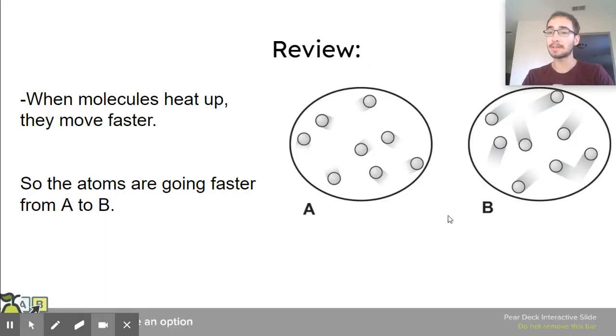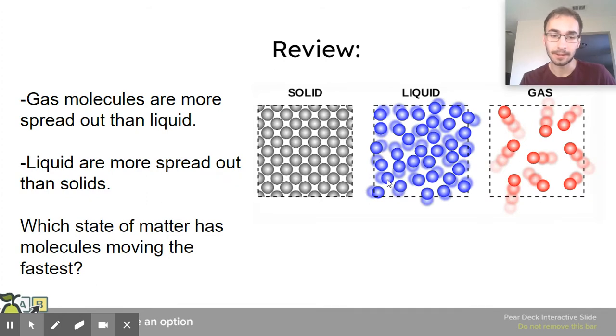Here's some review from the test. So we have two different molecules A and B but you should notice this was also on the test. When the molecules went from A to B they gained energy and they started getting faster. And when molecules move faster the temperature is hotter.